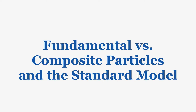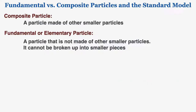This lecture is about fundamental versus composite particles and the standard model, which is basically a model of all particles that fundamentally exist. A composite particle is a particle made of other smaller particles. A fundamental or elementary particle is a particle that is not made of other smaller particles — it cannot be broken up into smaller pieces.